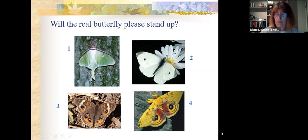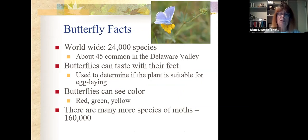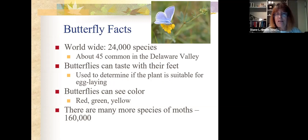Some interesting butterfly facts: we have about 45 species common in the Delaware Valley. Worldwide, there's about 24,000 species. Butterflies can taste with their feet, and they use that to determine if the plant is suitable for where they want to lay their eggs. Butterflies can see color, particularly reds, greens, and yellows. There are way more species of moths — 160,000 or so — but for the purposes of the North American butterfly count, we do not count moths, only butterflies.